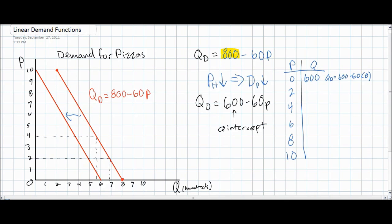We can now use our new demand function of QD equals 600 minus 60P to develop a new demand schedule. As you can see at a price of zero, the quantity demanded is now 600 minus 60 times the price for 600 pizzas. This tells us the Q-intercept, or the autonomous level of demand, or that number which would be demanded at a price of zero.